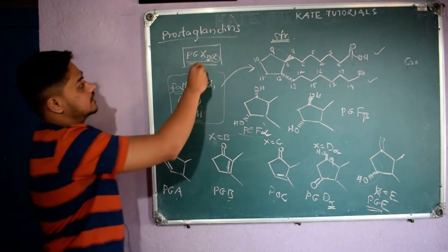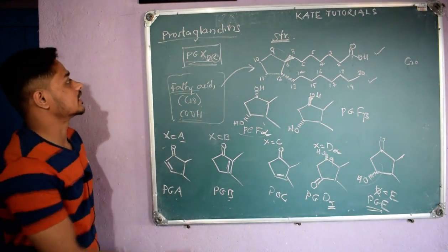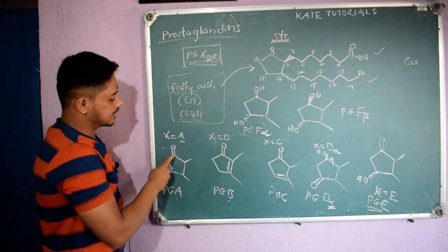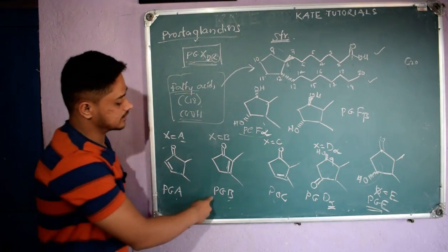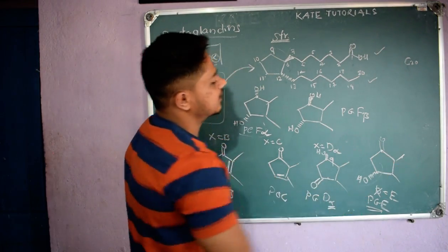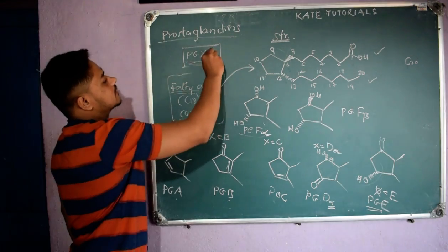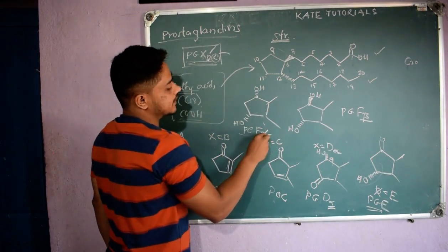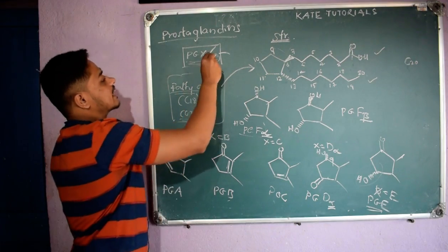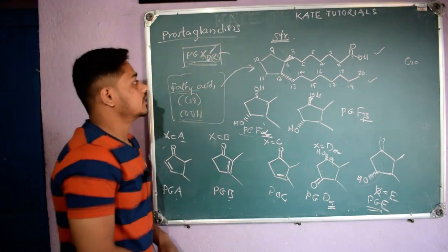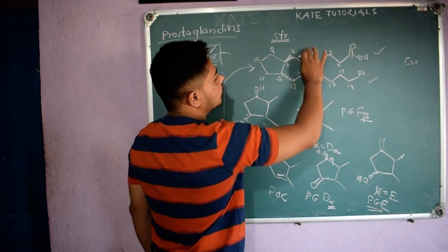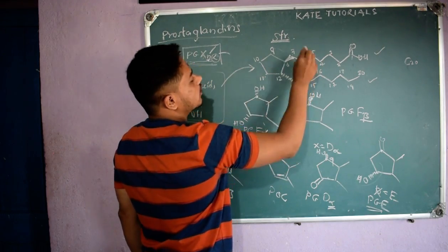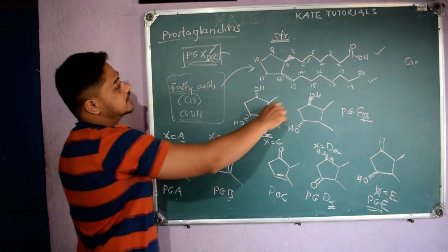So to summarize the X notation: PG stands for prostaglandins; X stands for the structure of the cyclopentane ring — it can be A, B, C, D, E, F, and so on. If C9 is above the plane it is beta; if it is below the plane it is alpha. Now, what is N?